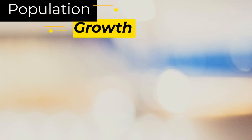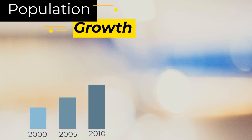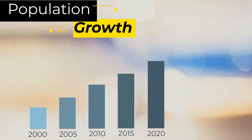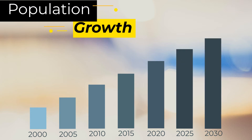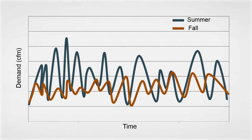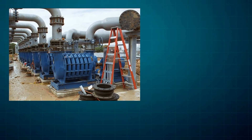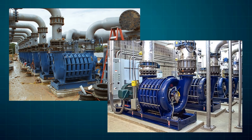A big part of the problem is the need to install a blower system that will meet increasing plant demand projected over 10, 20, or even 30 years. On top of that, treatment plants face daily and seasonal variations in air demand. So many aeration systems have been designed with very large blowers that run well below their best point of efficiency most of the time, and the benefits of more efficient blower designs are lost.